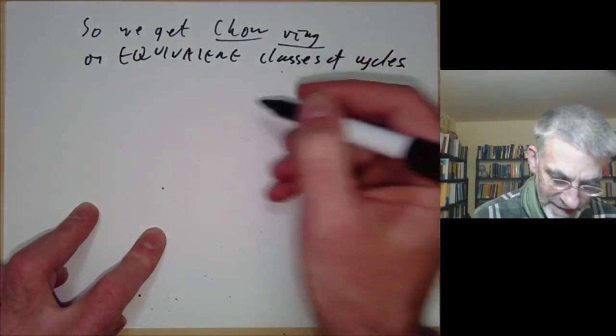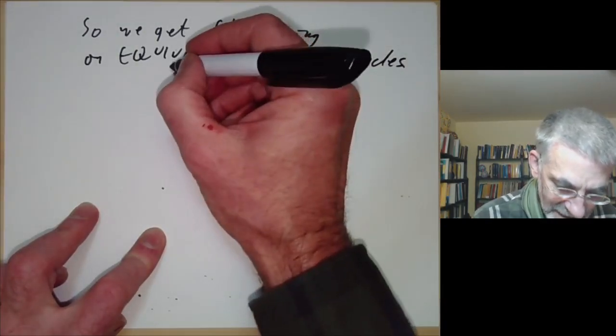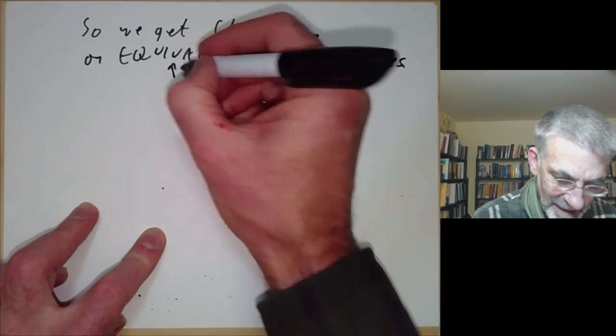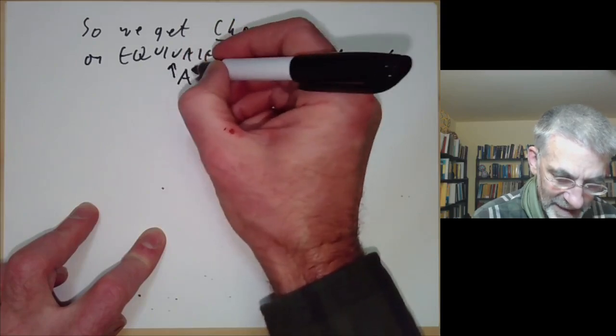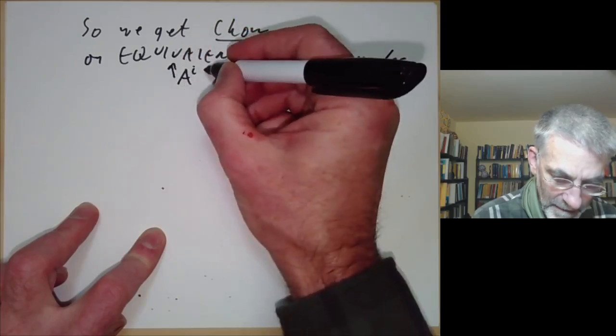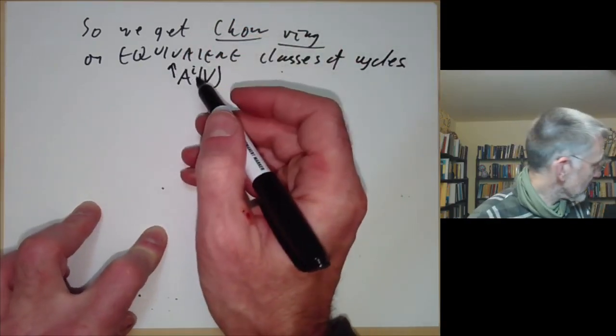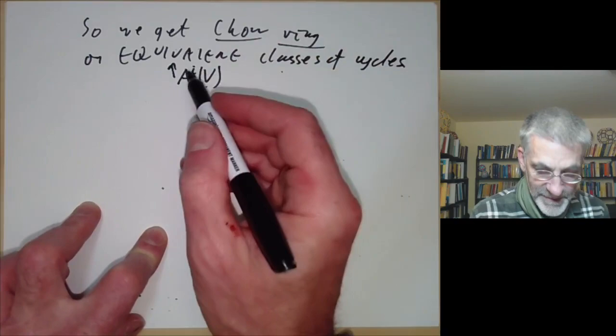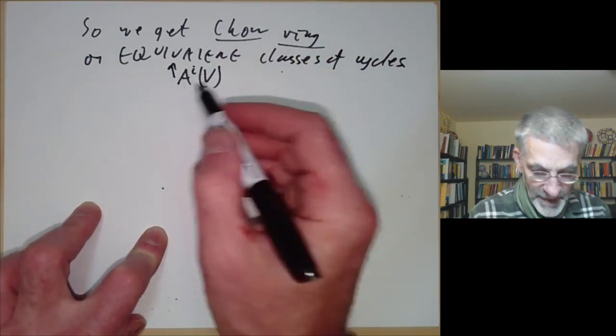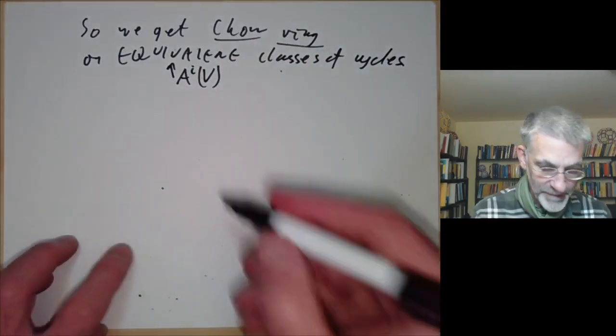We say two cycles of dimension J are rationally equivalent if C1 minus C2 equals the zeros of F, where F is a rational function on some sub-variety of dimension J+1. What Chow showed is that given cycles Y and Z, we can find Z' equivalent to Z so that Y intersection Z' is well defined — its components have the right codimension. Furthermore, Y intersection Z' is equivalent to Y intersection Z'' whenever Z' is equivalent to Z''. The result is a well-defined ring — the Chow ring — on equivalence classes of cycles.